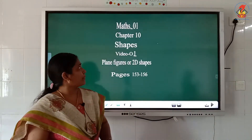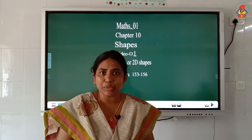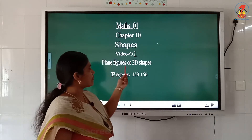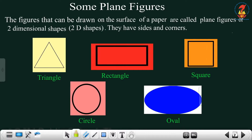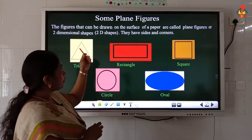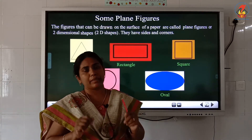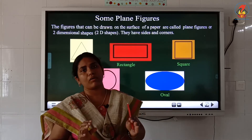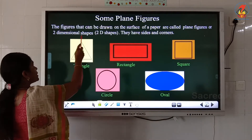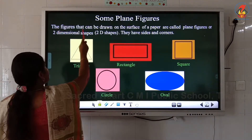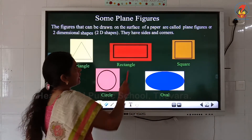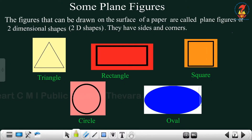Good morning children. Today's topic is shapes — we are going to start a new chapter on plane figures, or 2D shapes. Plane shapes are the shapes that can be drawn on the surface of a paper. The pictures that can be drawn on a piece of paper are called plane shapes, two-dimensional shapes, or 2D shapes.